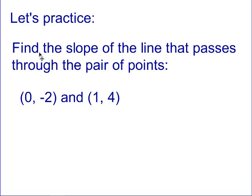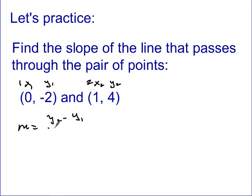Let's practice that. We're going to find the slope of the line that passes through a pair of points. In order to calculate the slope, we use our formula. What I asked you to do in class is label one point as point 1 and the other as point 2. In the first point, the x-coordinate becomes X1 and the y-coordinate becomes Y1. In the second point, the x-coordinate becomes X2 and the y-coordinate becomes Y2.